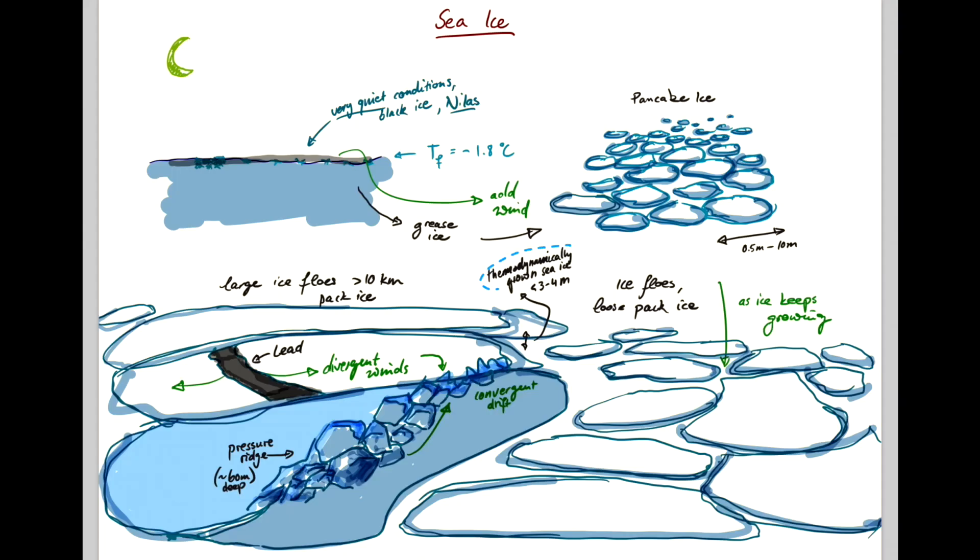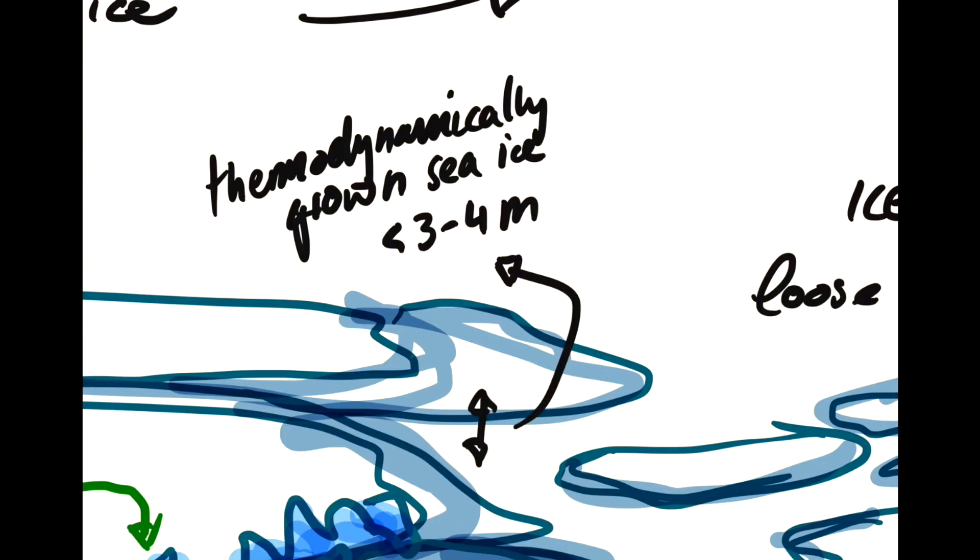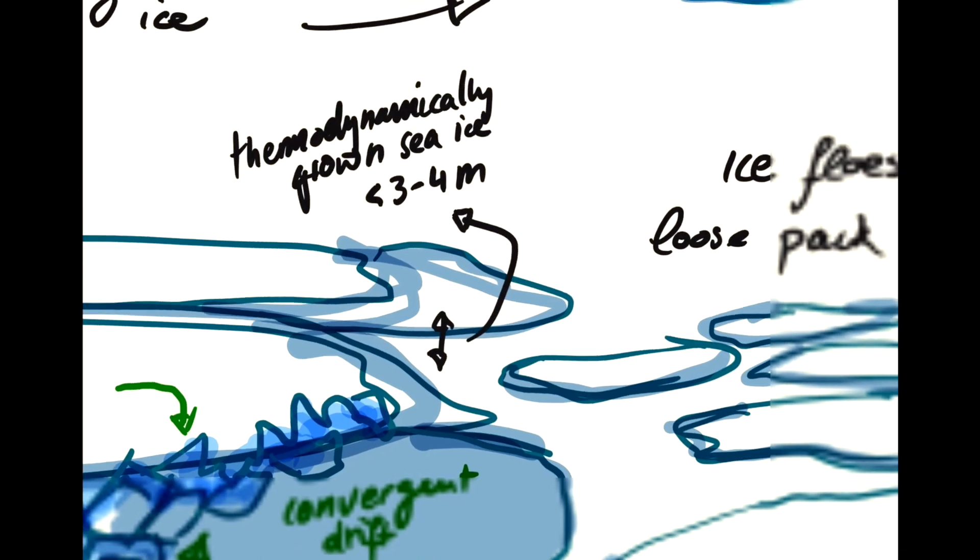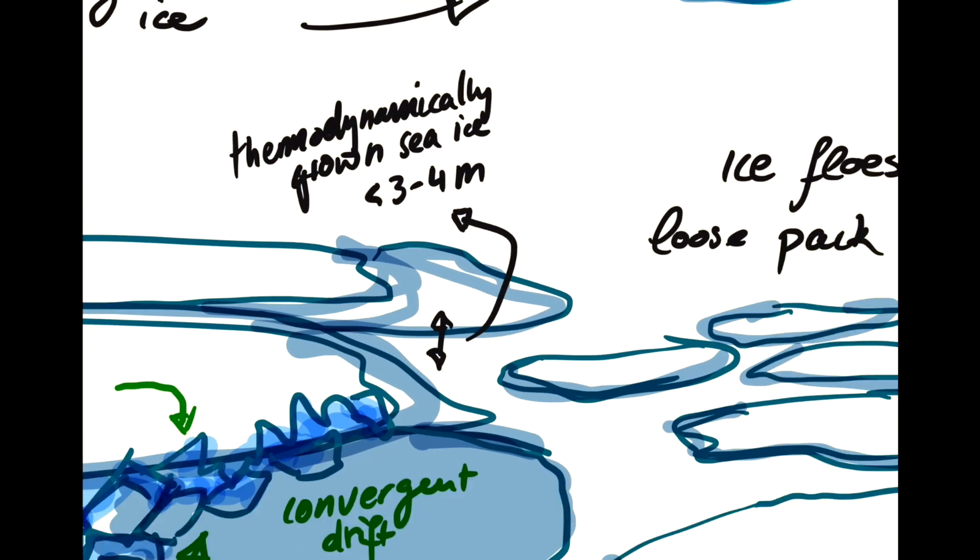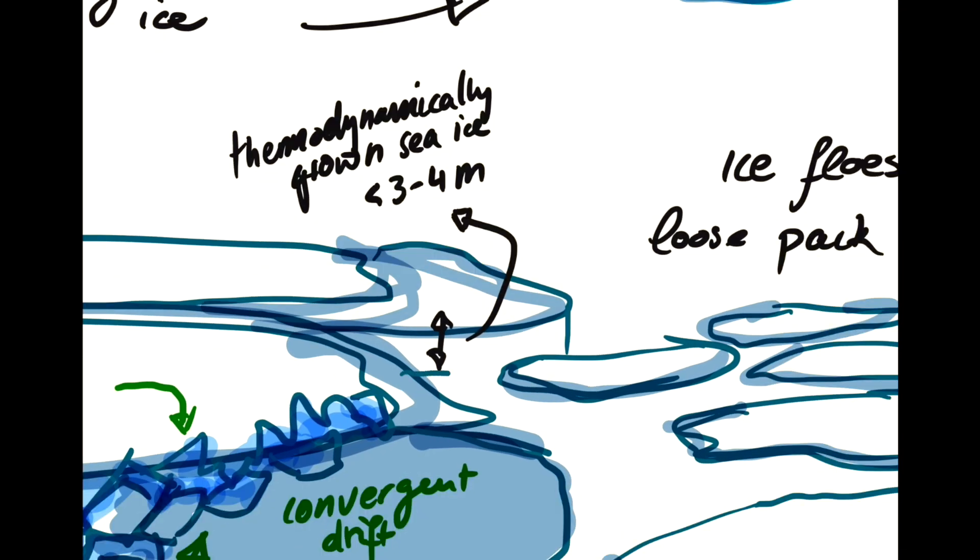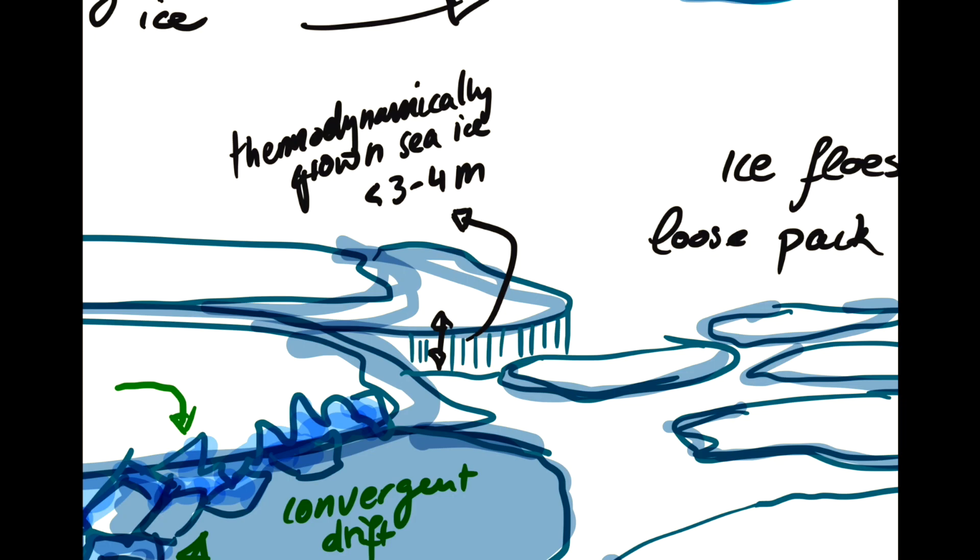And that is because the thicker the ice, the harder it becomes to grow more, because it isolates the ocean from the really cold temperatures in the atmosphere. So the thickness here is typically less than three to four meters. And for ice that's just one year old, it's typically one to two meters.